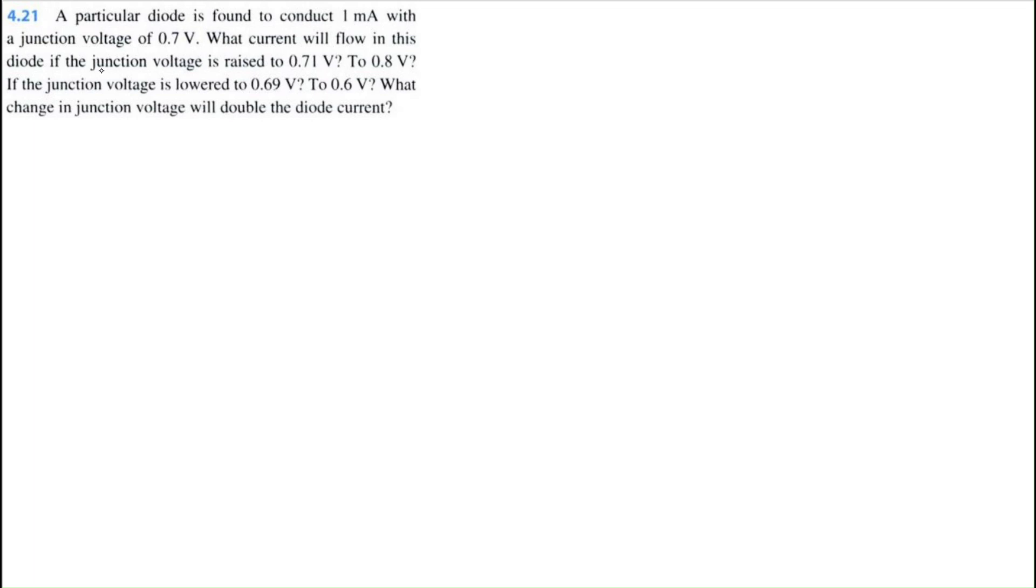Let's solve problem 4.21 from Microelectronics Circuits 8th edition by Sedra and Smith. A particular diode is found to conduct 1 milliamp with a junction voltage of 0.7 volts. So we have a 0.7 voltage junction, we have a current of 1 milliamp.